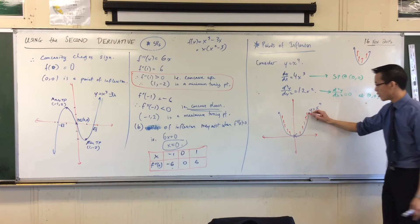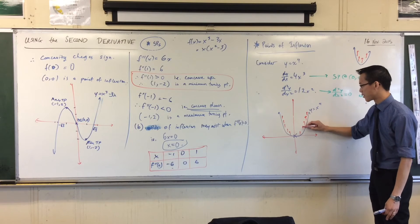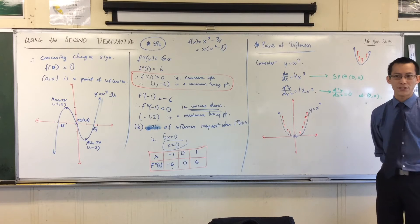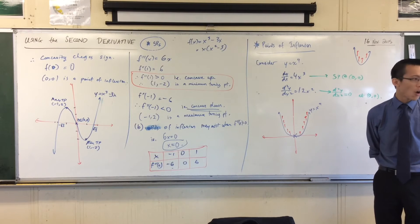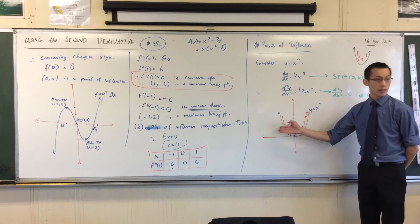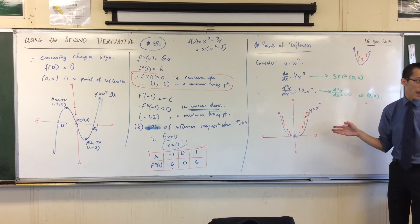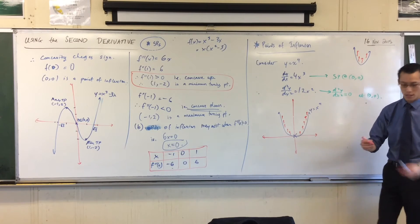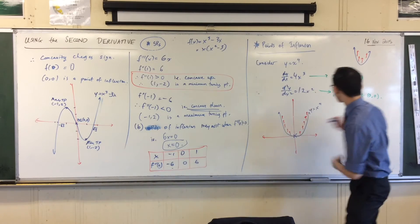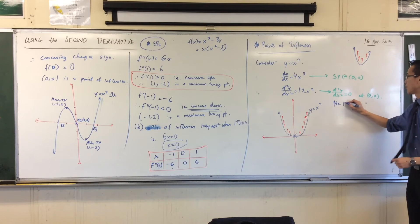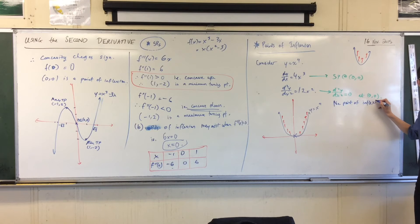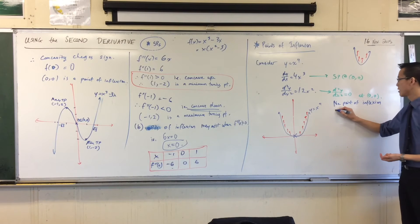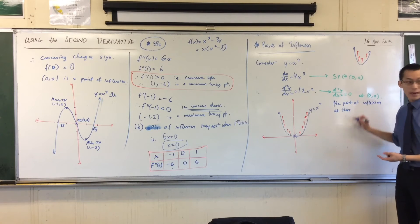Now, have a look at my arrows. Have a look at my concavity, my red concavity arrows, right? Is there a change in concavity? Clearly not. It's concave up on the left. It's concave up on the right. There is no point of inflection here. So I would say there is no point of inflection as there's no change in the sign of the concavity, right? And I can draw the table values to demonstrate that.